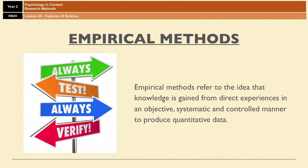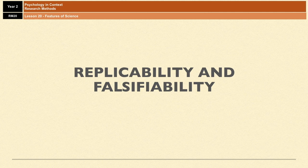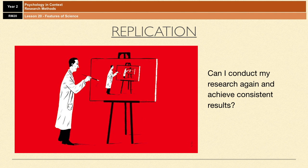Moving on, we have replicability and falsifiability. Something is considered scientific if it is replicable — replicability is a key feature of science and refers to the ability to conduct research over and over again and achieve consistent results. If the findings can truly be generalized and therefore truly be valid, psychologists would expect that any replication of a study using the same procedures would produce similar findings and reach the same conclusions.